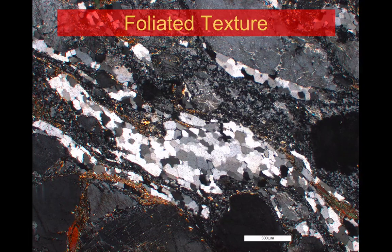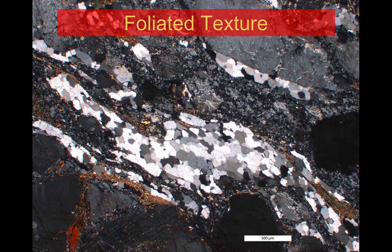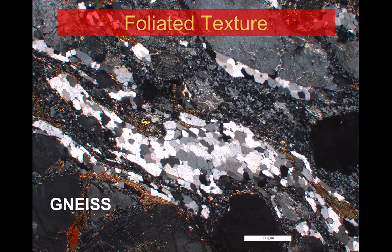It's not just chlorite and other mica minerals that will create foliation. In this rock we can see bands of different colored minerals — different types of minerals grouping together but with still a clear alignment within the rock. Where we get this banding of different minerals, that creates a rock we call a gneiss, and it's formed at much higher temperatures and pressures than a schist.